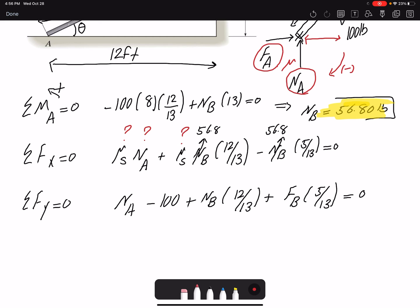Again, the value for N_B is 56.8 pounds. The value for F_B is μ N_B, or μ times 56.8. So if I look at these two equations, I have two unknowns: μ and N_A. Two equations and two unknowns, so I can find my unknowns.